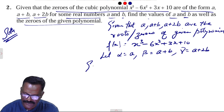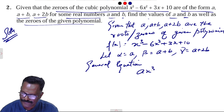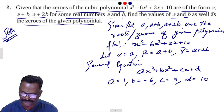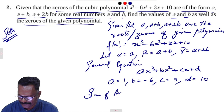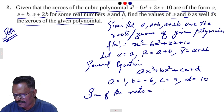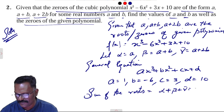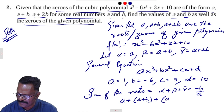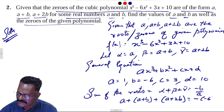The general cubic equation is ax cube plus bx square plus cx plus d. Here a₁ equals 1, b₁ equals minus 6, c₁ equals 3, d₁ equals 10. Using Vieta's formula: alpha plus beta plus gamma equals minus b₁ by a₁. So a plus (a plus b) plus (a plus 2b) equals minus(minus 6) divided by 1.